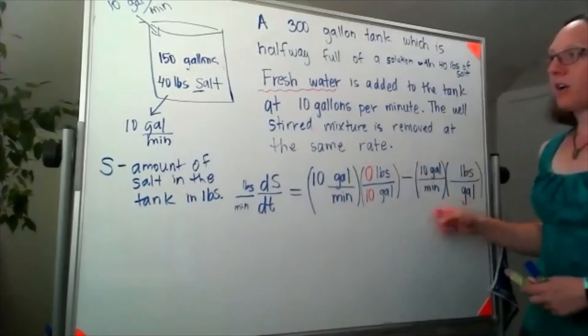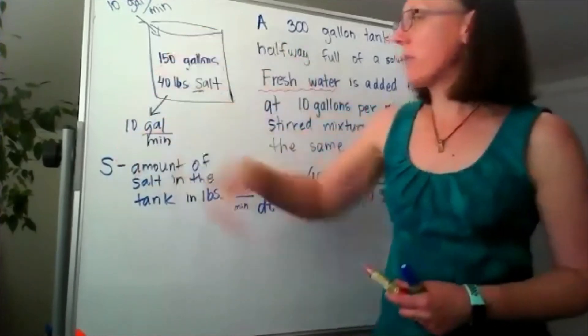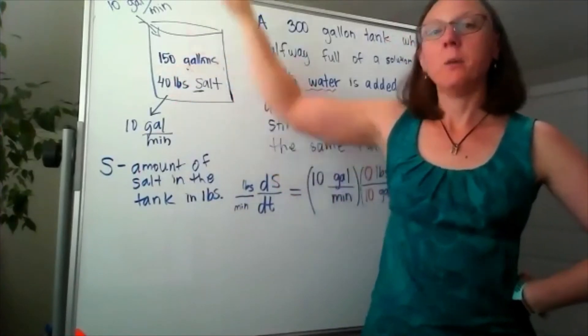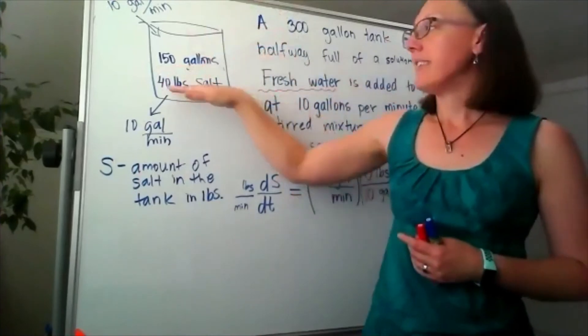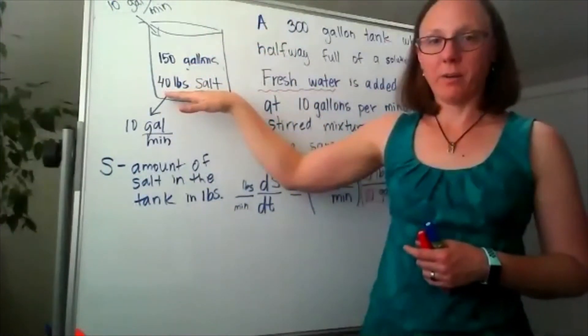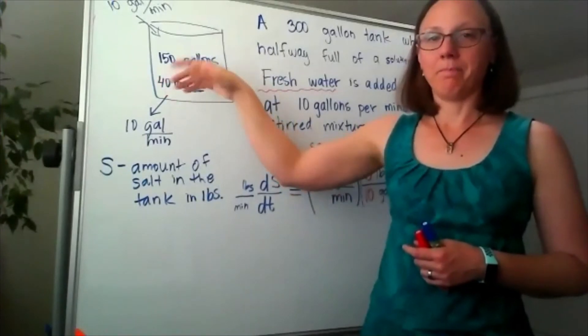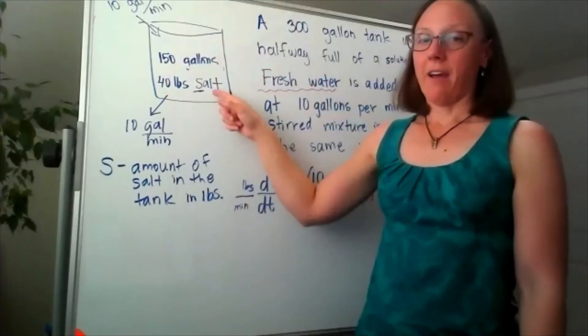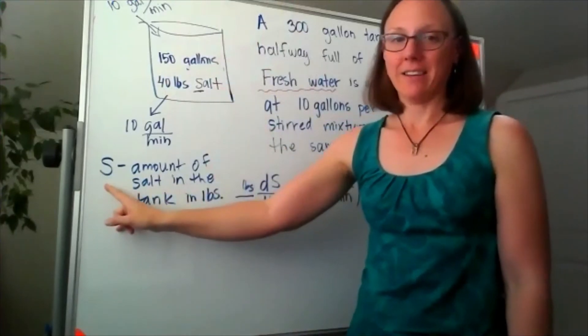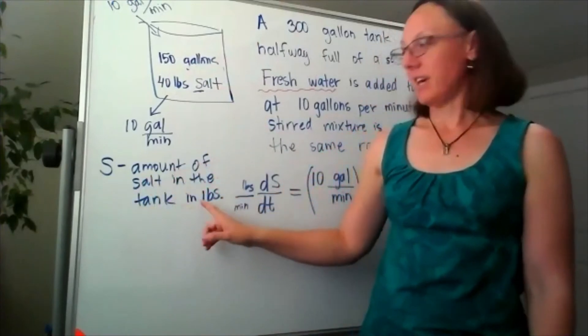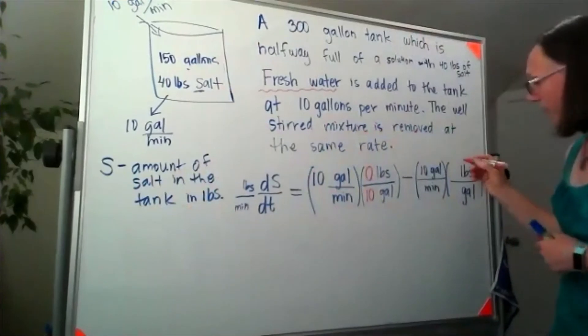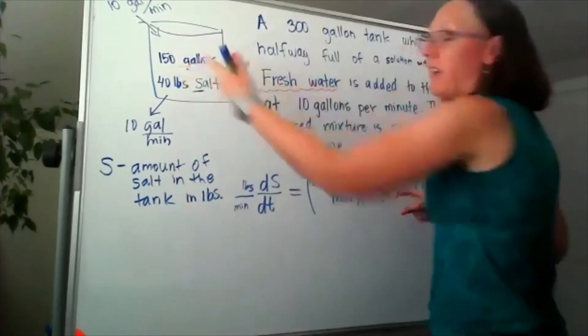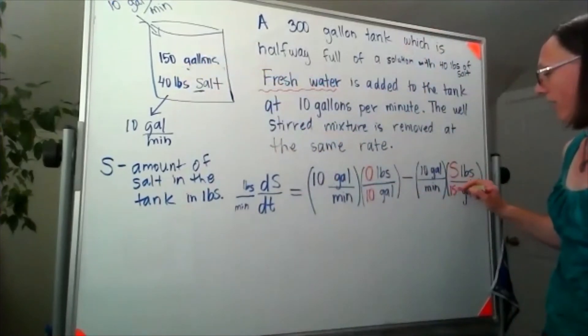Now if I come back here, what's coming out is coming out of the tank. It started as 40 pounds of salt per 150 gallons, but as I'm flushing in fresh water, this amount is going to change. It won't stay at 40 pounds of salt because some of that is going to get diluted and then flushed out again. What we do have is an expression S for the amount of salt in the tank in pounds. So I'm going to have S pounds of salt per—and then our volume of the tank is 150 gallons.